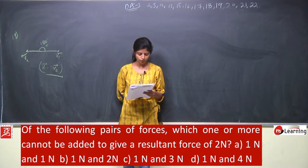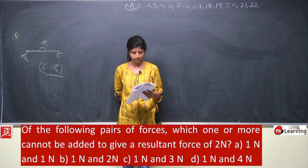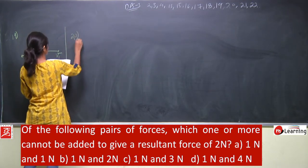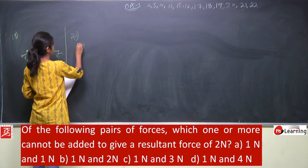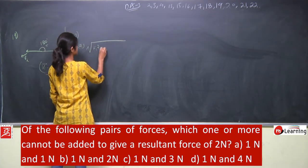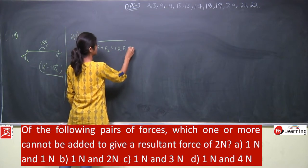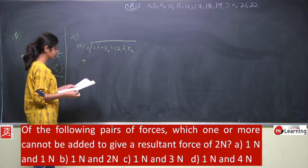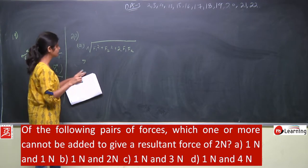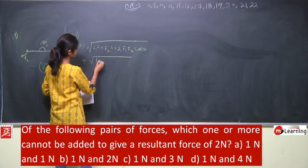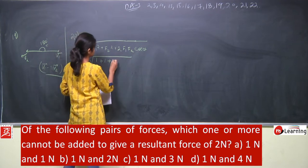Question number 20: Of the following pairs of forces, which one cannot be added to give a resultant force of 2 newtons? For any two forces, the resultant is the square root of F1² + F2² + 2·F1·F2·cos θ. For case A: 1 newton and 1 newton, F1 = F2 = 1, so the expression becomes 1 + 1 + 2·cos θ.